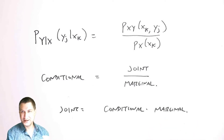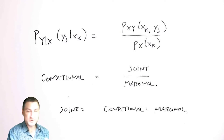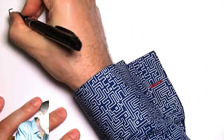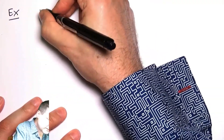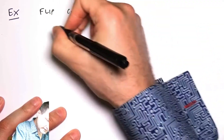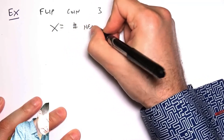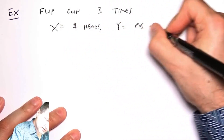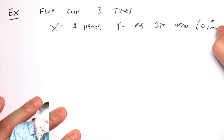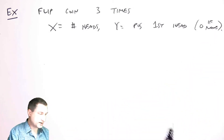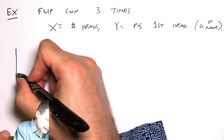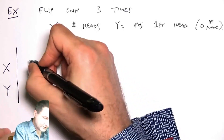I'll do a bunch of examples along these lines later, but this is the key thing to remember — put this on your crib sheet. Let me do an example to develop the idea for a pair of discrete random variables. Suppose we flip a coin three times: X equals the number of heads, Y equals the position of the first head, and zero if there were no heads. Let me enumerate the possible outcomes and the values of X and Y.